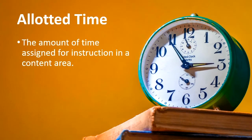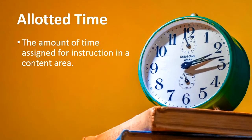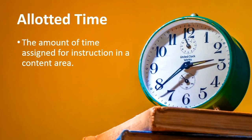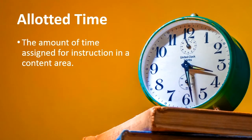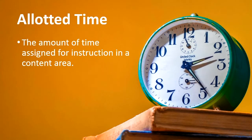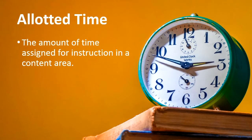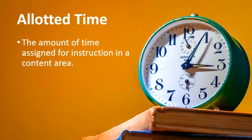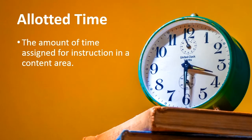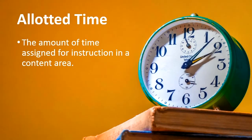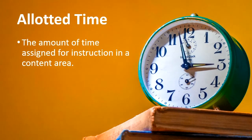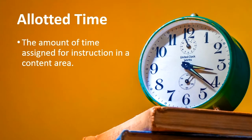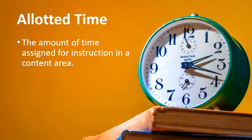Then comes allotted time. Allotted time is the time assigned to you for particular instruction in a content area. For example, if there are six hours in the school day, how many hours are allotted for mathematics, languages, English, science, or social science? Allotted time is a part of the total available time. You may have six hours of available time in a school, but you may have eight periods of 40 or 30 minutes each, giving you three to four hours as allotted time for instruction, with the remaining time for preparation.